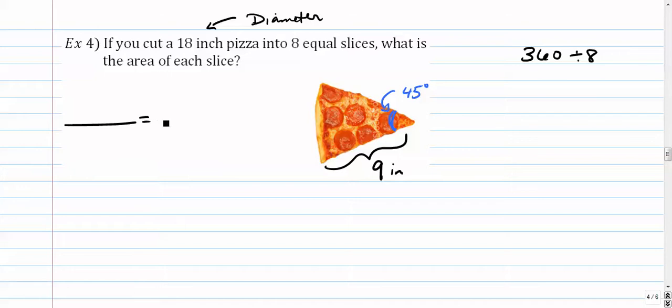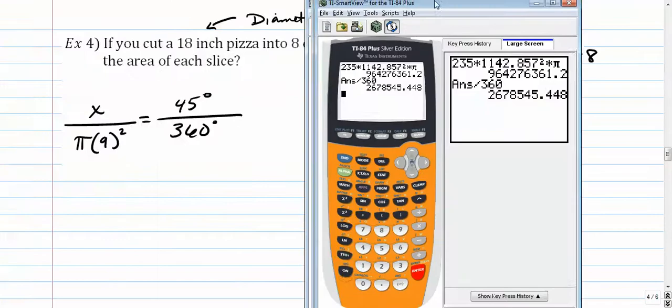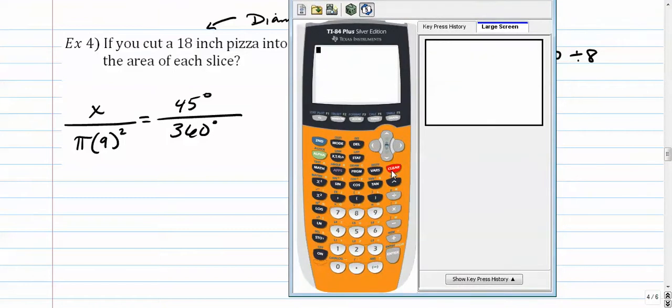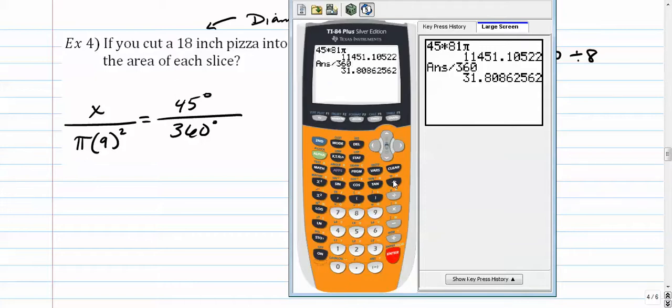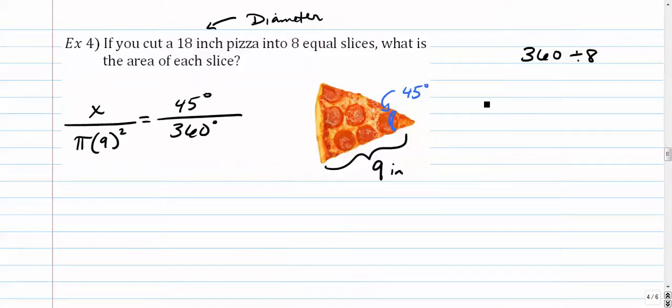When we divide, we get that this angle is 45 degrees. So here we go. Area formula for a sector. The sector area divided by pi times r squared is equal to 45 over 360. Take the pi times 9 squared and move it up to the right. Multiply it by 45. So 45 times 81 pi divided by 360. That would be 31.809 square inches. That's how much space this piece of pizza takes up.